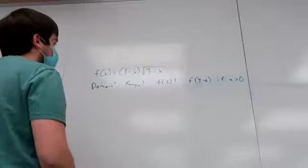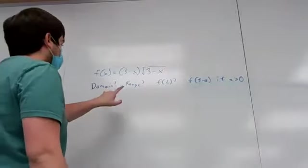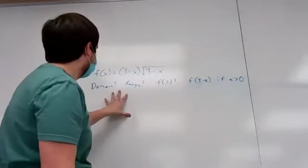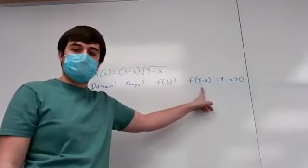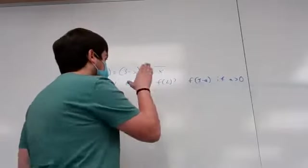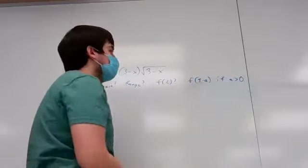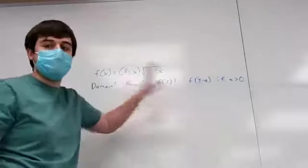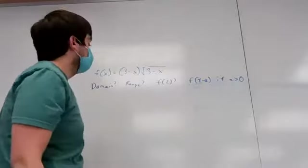Let's start running through this. One thing I want to mention is that I saw on the quiz that people were finding domain and range for the function, but then also finding domain and range for each of these values. As long as the number works — if I can put 2 or 3-a inside this function — those numbers are part of the domain. They don't give you a new domain. There's only one domain and one range.